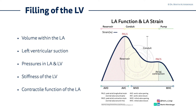Keep in mind that left atrial strain will be very important in the next lectures. Try to remember the normal values for the two measurements we have in left atrial strain: the PALS — the peak atrial longitudinal strain — and the PACS — the peak atrial contraction strain — seen below the graphic.